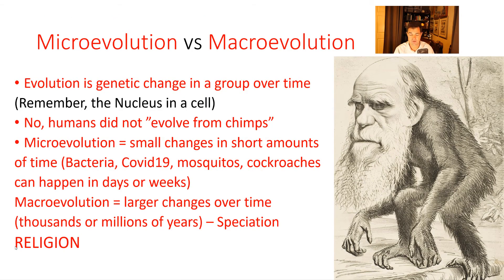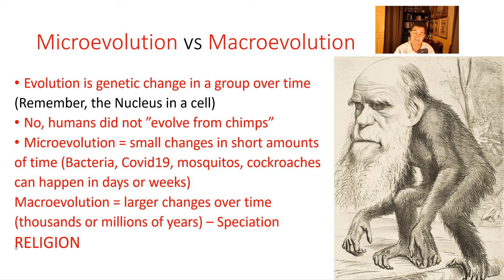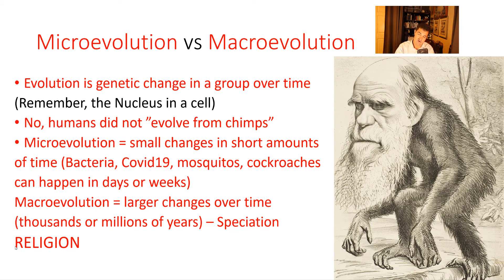When we talk about evolution, we can broadly discuss it in two senses. Microevolution means somewhat small genetic changes in a group of organisms over time. Macroevolution is the same idea but over much longer periods. A common misconception — partly from how people in the 1800s mocked Darwin — is that evolution means humans came from chimpanzees. That is not true. Humans did not evolve from chimps.